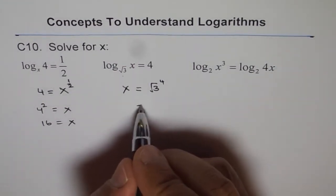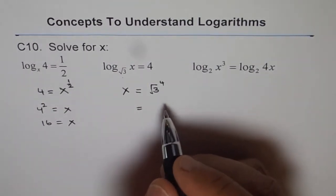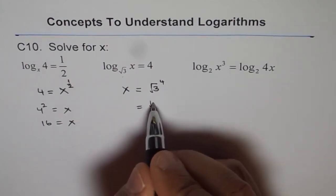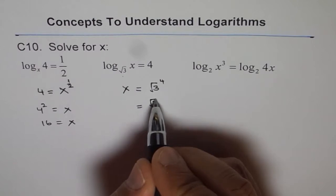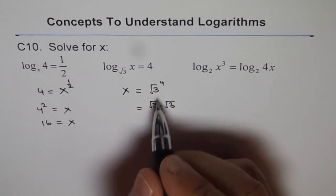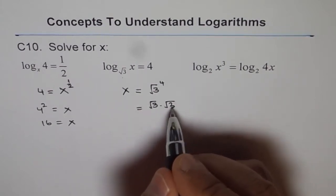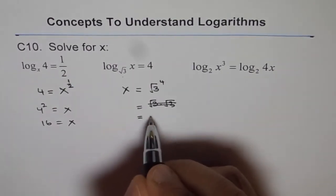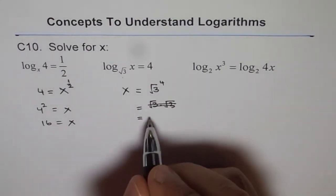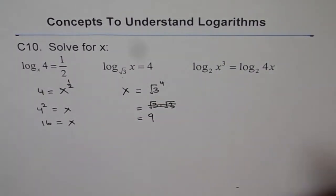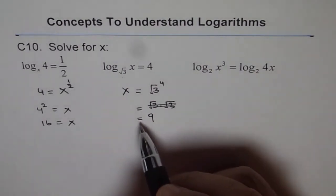Square root 3 to the power of 4 is square root 3 squared twice. Square root 3 squared is 3, so it is 3 squared, which is 9. Square root 3 to the power of 4 will be 9. That is your answer for this one.